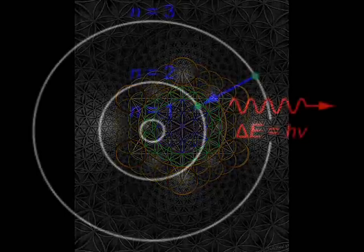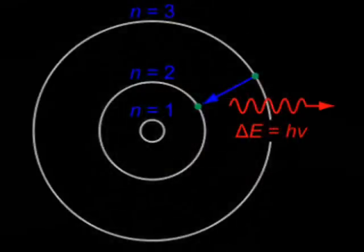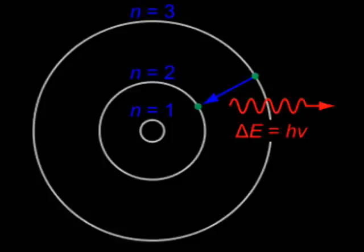Remember the problem with quantum mechanics? When we have the electron orbiting and the emitted photon does not have the same frequency as the orbiting electron.